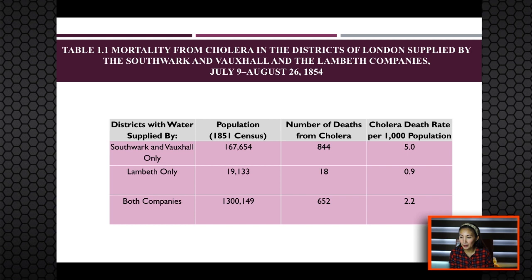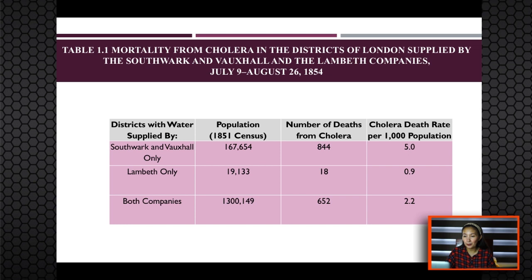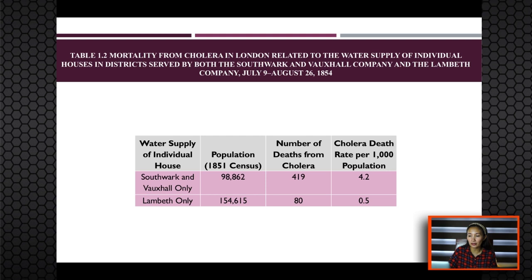At that time, both companies obtained their water from the Thames River at intake points downstream from London, making them susceptible to contamination from London sewage discharged directly into the Thames. To avoid this contamination, in 1852 the Lambert Company moved its intake waterworks to a site on the Thames well upstream from London. The data showed a seven-week period in the summer of 1854 when he compared mortality among districts receiving water from one or both companies, consistent with the hypothesis that water obtained from the Thames below London was the source of cholera.